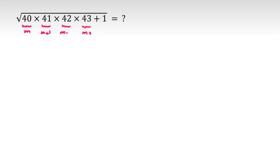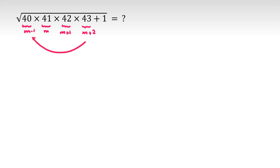We can instead define the variable so the four numbers become m minus 1, m, m plus 1, m plus 2 — now we don't have an m plus 3. The numbers are more symmetric. Let's multiply: we multiply the first by the last.